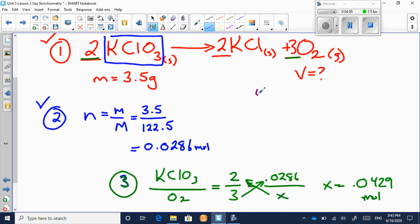Step number four is to convert back. So in this case, we're solving for volume. Now it's the volume of a gas, so we know that PV equals NRT. So V is equal to NRT over P.